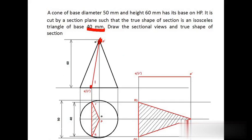The section plane gives two intersecting points: q dash at the front and r dash at the back side. Projecting these to the top view, you get q and r. The points q dash and r dash are selected such that the distance q–r equals 40 mm. If you select a point to the left of q dash r dash, the projected distance will be less than 40 mm; if to the right, greater than 40 mm. To get an isosceles triangle of base 40 mm, you must select exactly this position.